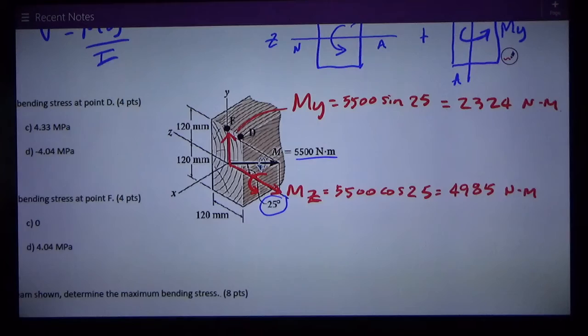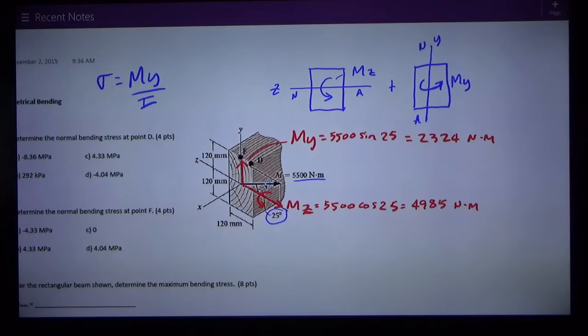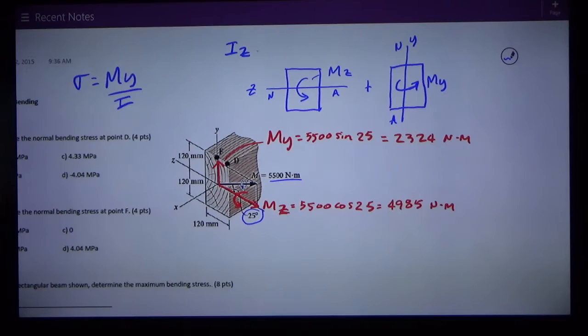Now let's figure our moments of inertia because we're going to need that. We need the moment of inertia about the z axis which is a simple rectangle so we use bh³/12. So Iz is bh³/12, it's 120 wide, 240 tall, we cube that and divide by 12 and we get 138.2 × 10⁶ millimeters to the fourth.